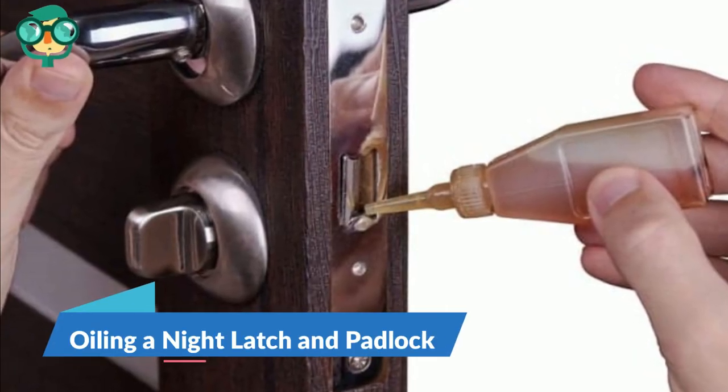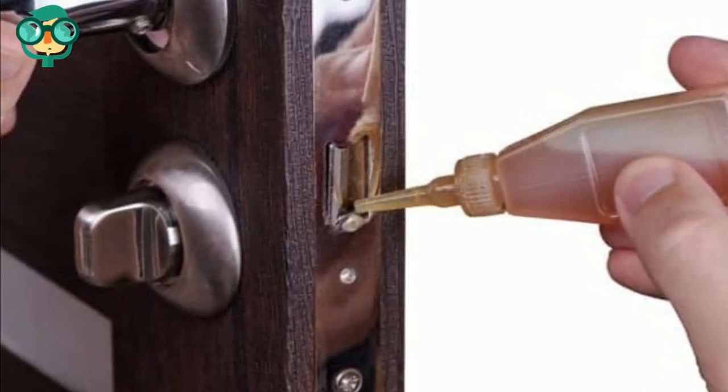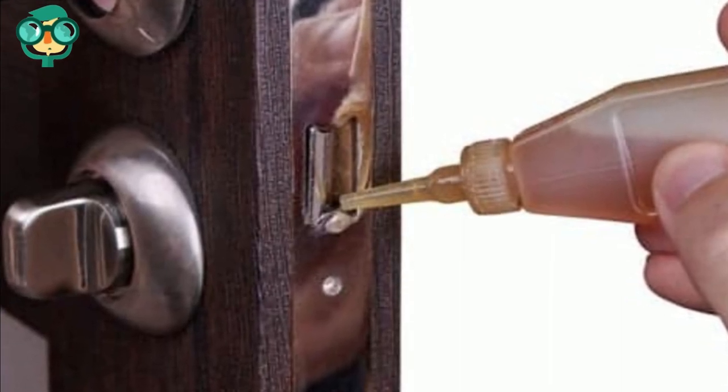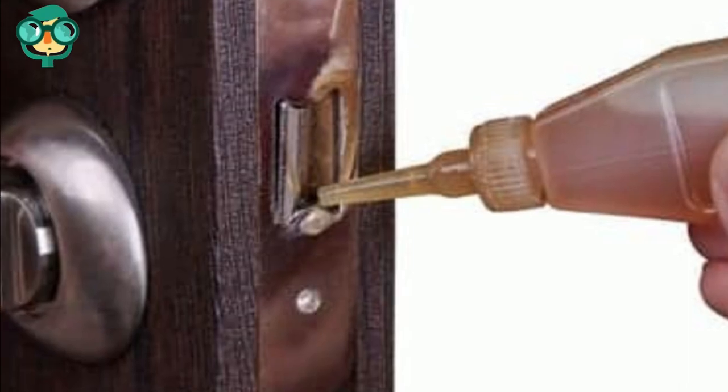The third method is oiling a night latch and padlock. Grease the interior latch and switch. Add a few drops of oil to the interior latch of the night latch. Then, add a drop of oil to the snip switch and to the base of the knob.